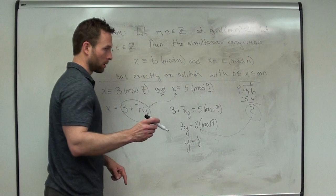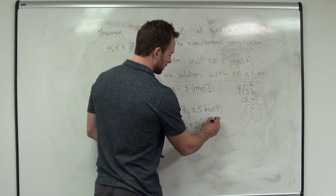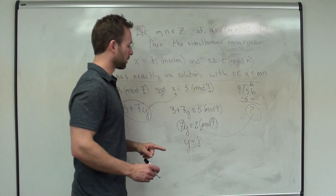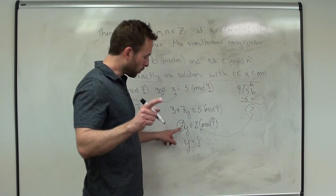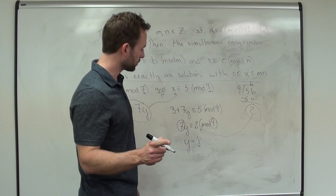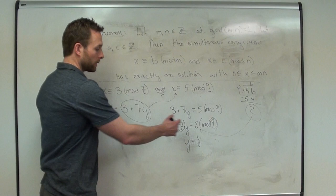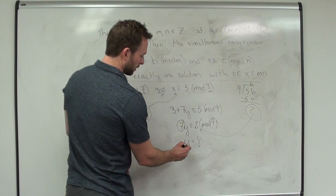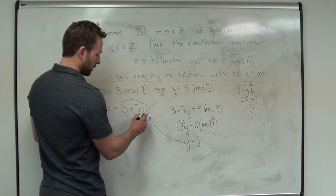Why do we have one unique solution? Well, these two guys are co-prime — that's our assumption at the very beginning. If GCD is 1, then 1 will always divide the right-hand side, whatever it is, so that tells us there's one solution. That's from the linear congruence theorem, and finding the solution comes from the Euclidean algorithm. So we got y = 8. Plug it back in: x is 7 times 8 plus 3, which is 56 plus 3 = 59. That's our solution.